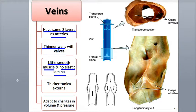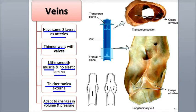They also don't have either the internal or external elastic laminae. The thickest layer in the veins is the tunica externa, which is made of collagen and elastic fibers. Veins cannot endure high pressures, but can distend to accommodate larger volumes of blood and changes in pressure.